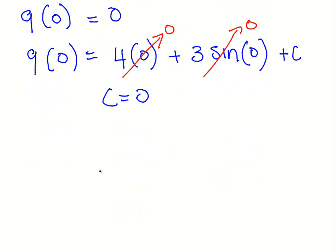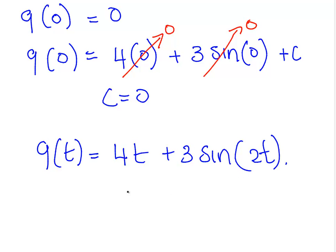Wrapping it up. q of t equals 4t plus 3 times sin of 2t and just put in the coulombs there. Denominated in coulombs. So, that is good. We will leave it there.